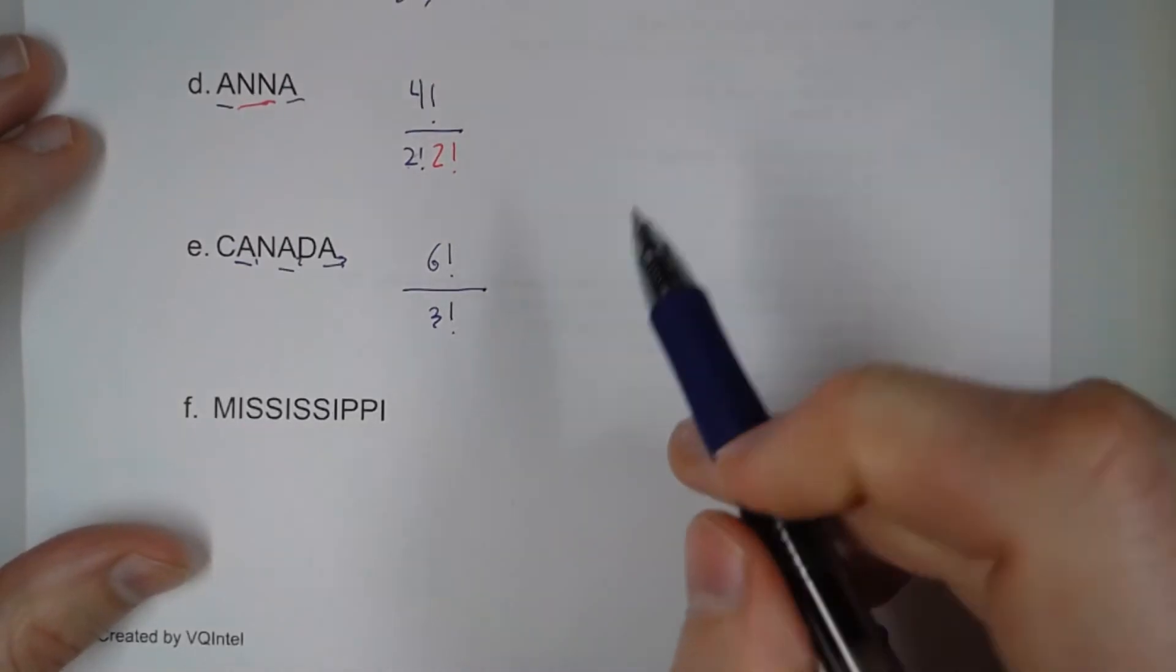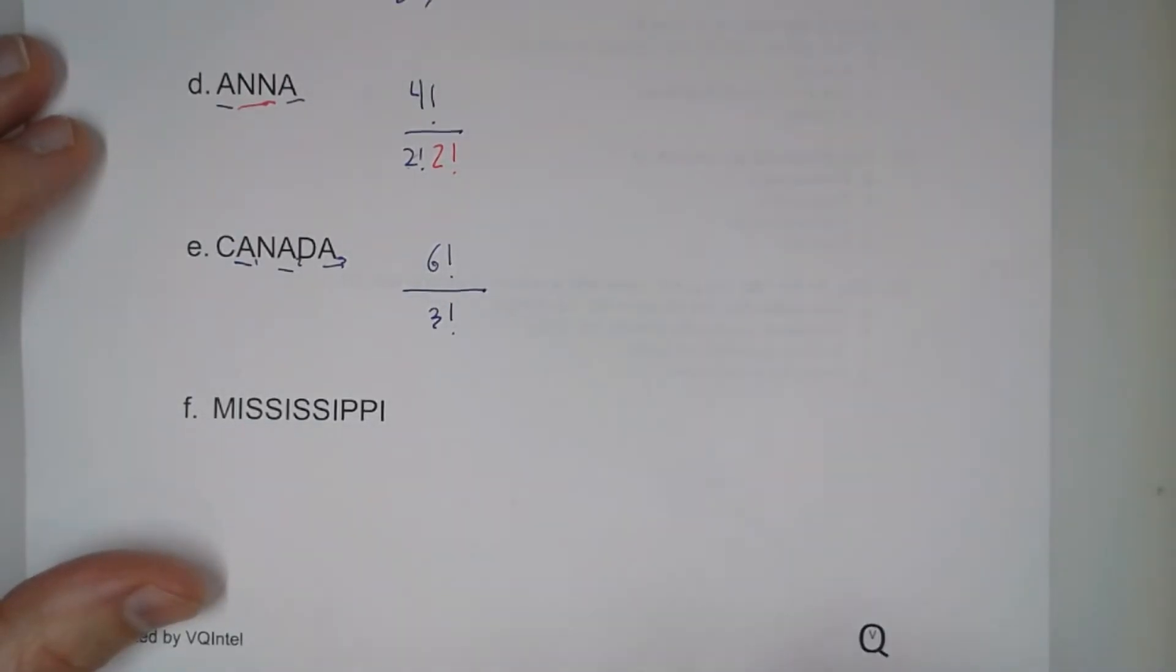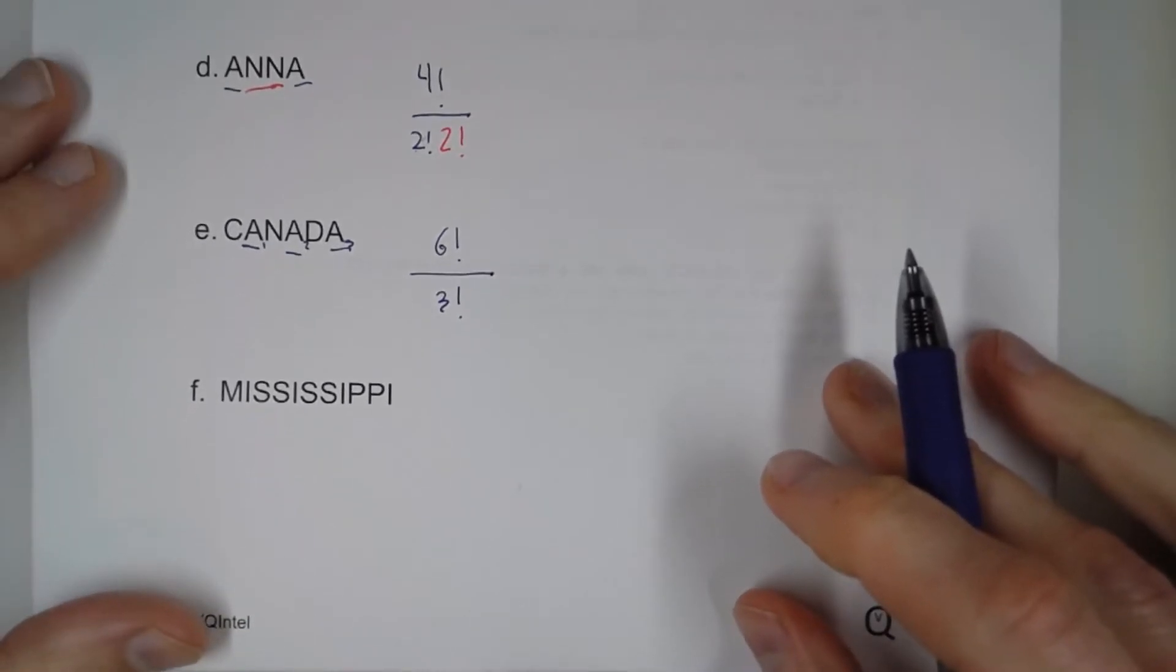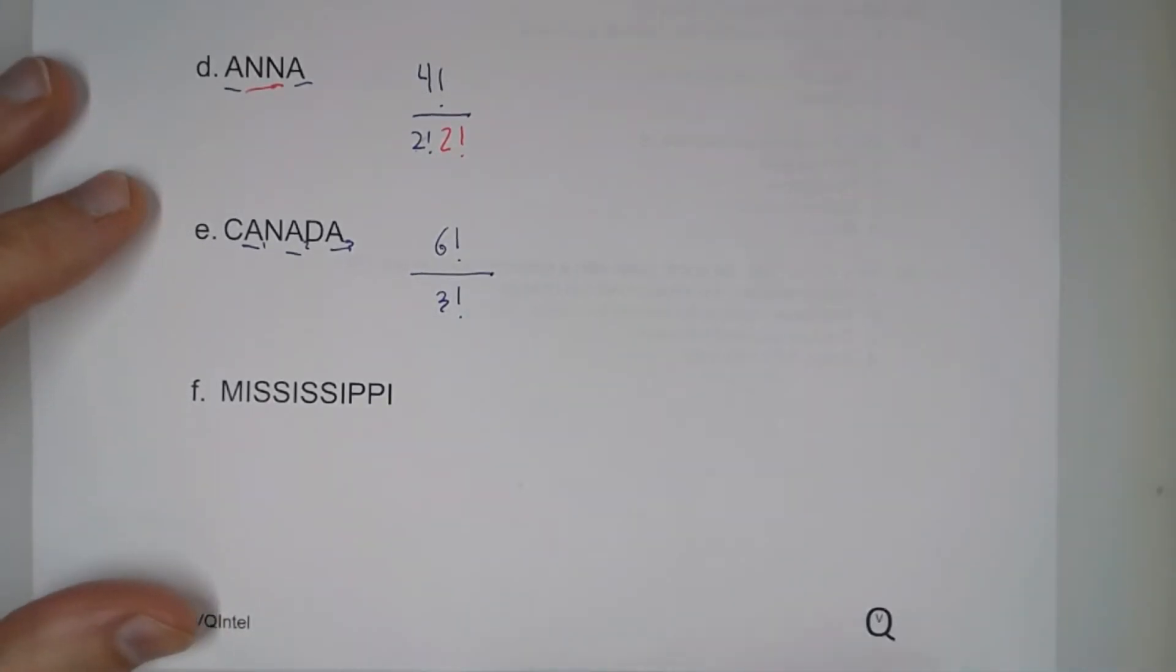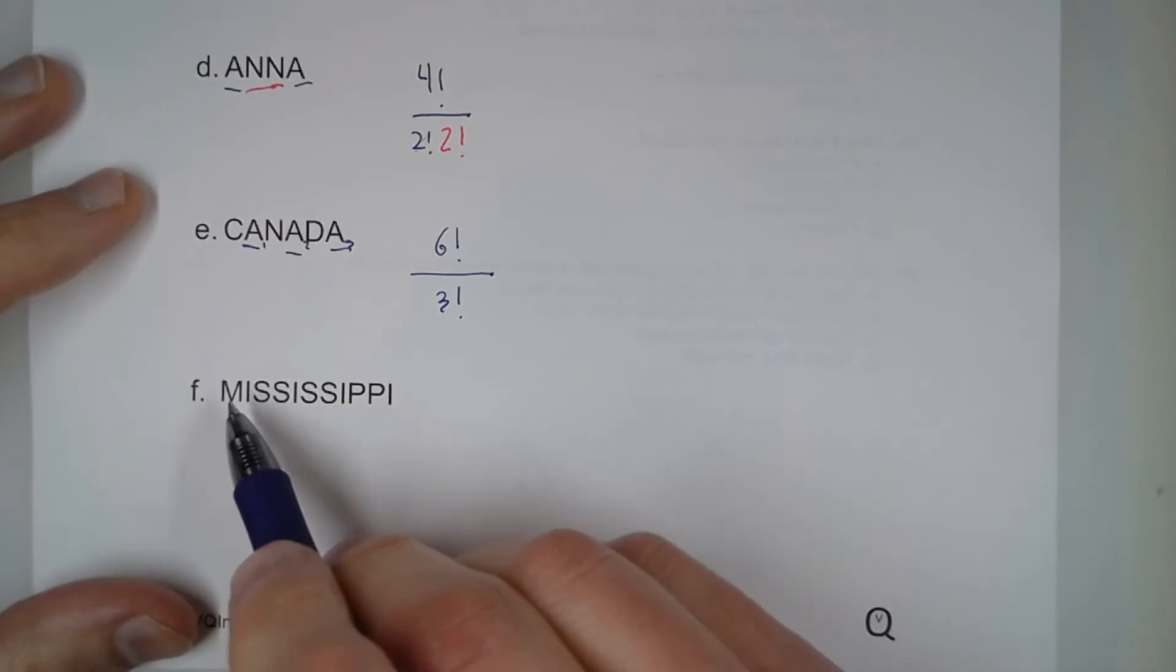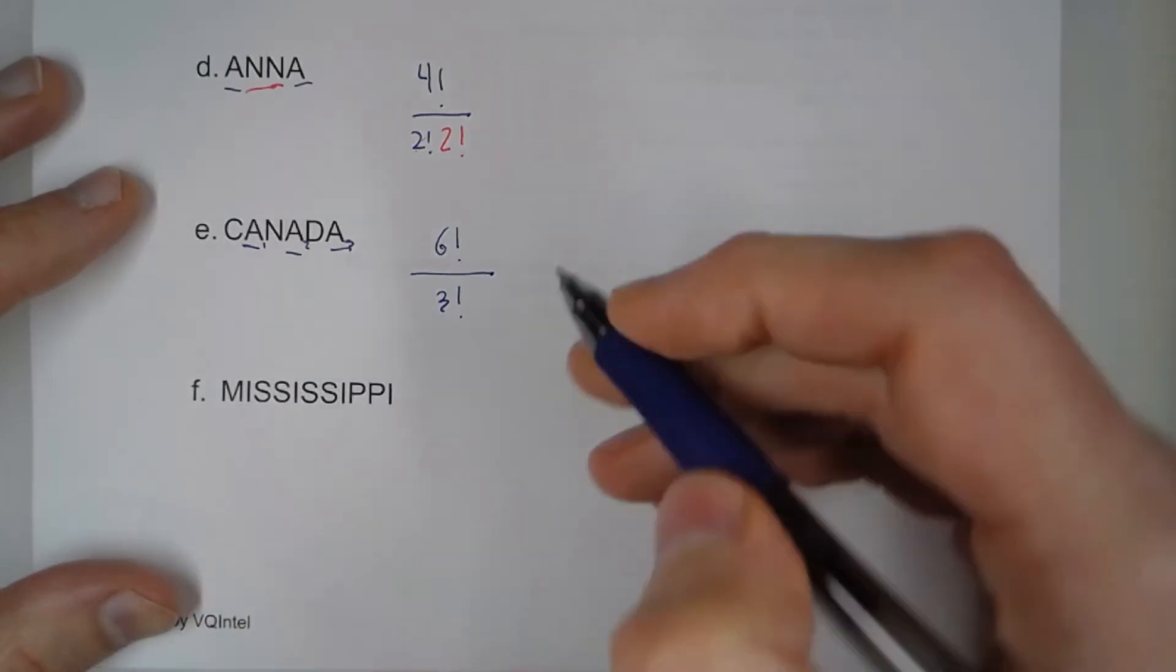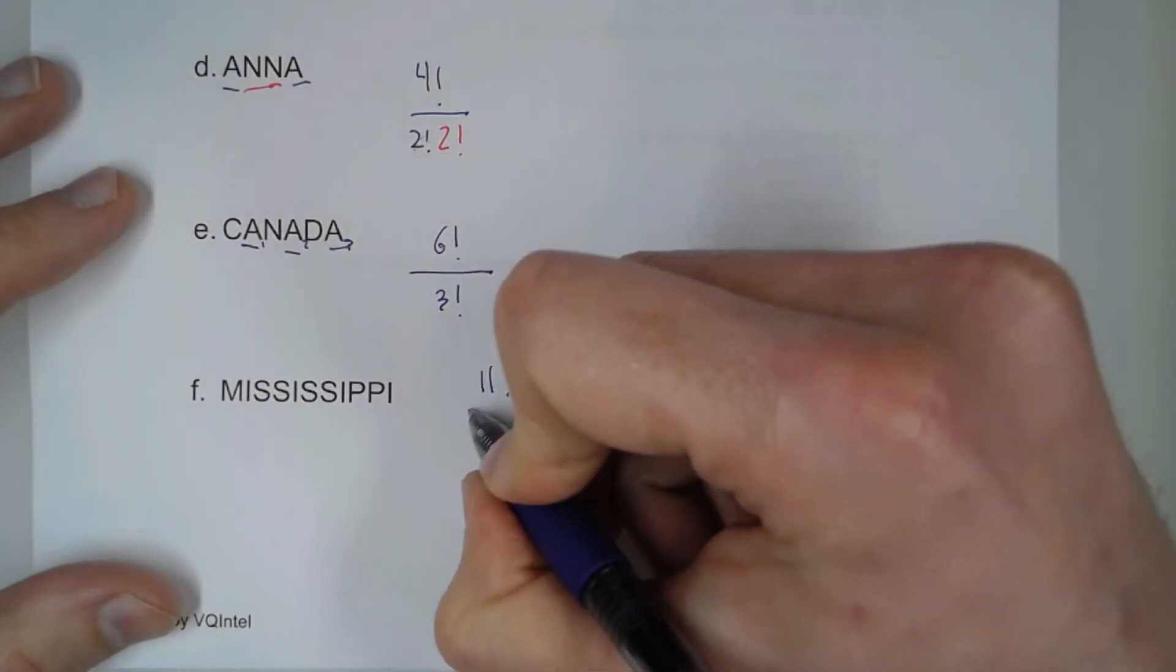And so the classic example with word permutations is the word Mississippi. A lot of tests will often throw this word at you. So let's count up the letters. One, two, three, four, five, six, seven, eight, nine, ten, eleven.